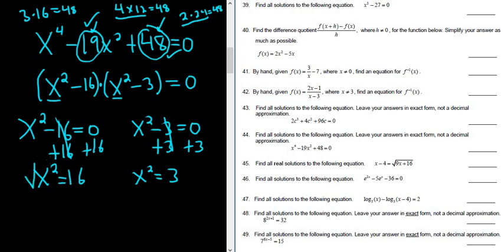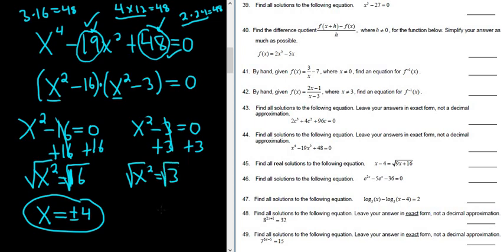All right, now we take the square root here, take the square root here. Whenever you take the square root of a variable squared, you always get a plus or minus. So this is plus or minus, and the square root of 16 is 4. Boom, that's two answers. Same thing here. Take the square root. So you get x equals plus or minus the square root of 3. Boom, that's the answer.